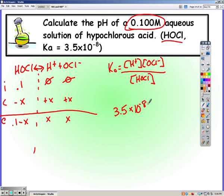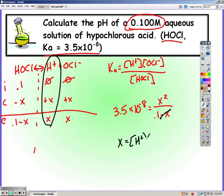Plug it into our equilibrium expression. Ignore X, and solve for X. X is still concentration of H. Our concentration of H is 5.92 times 10 to the negative 5th. So our pH is equal to 4.23.